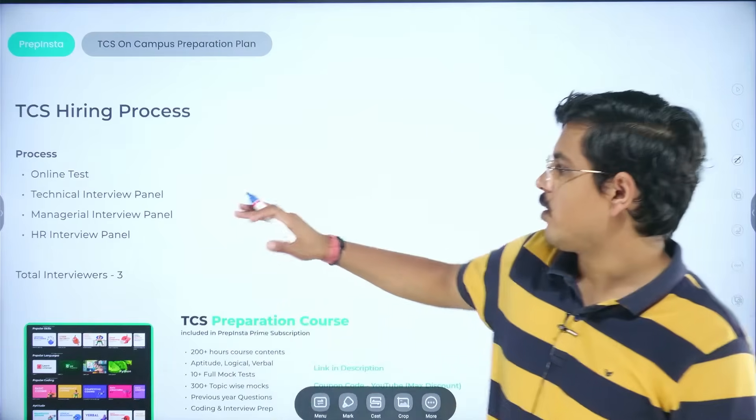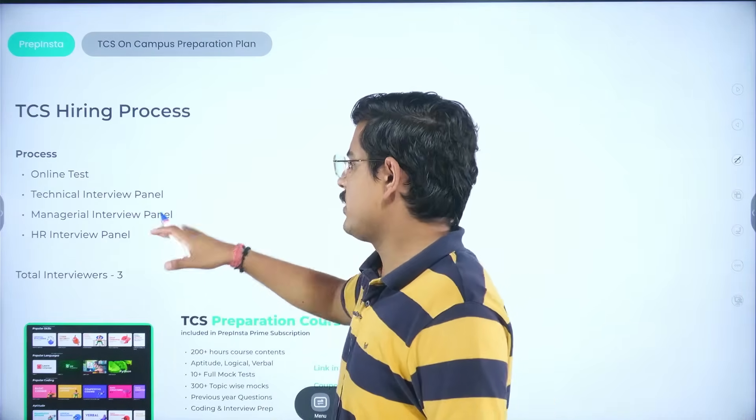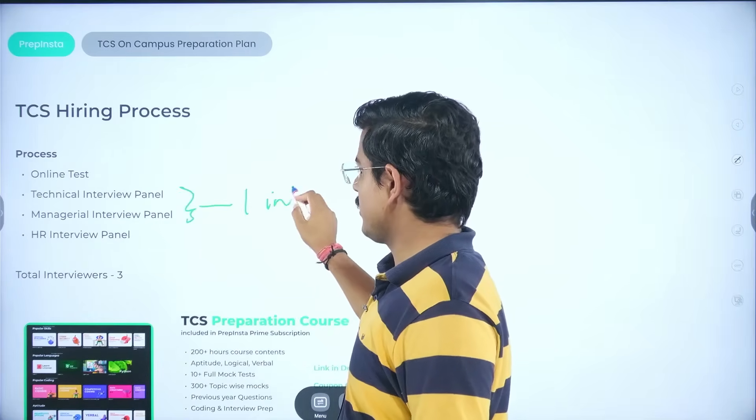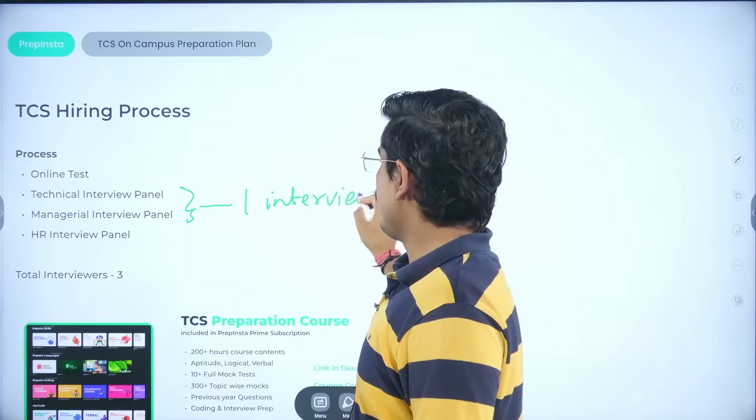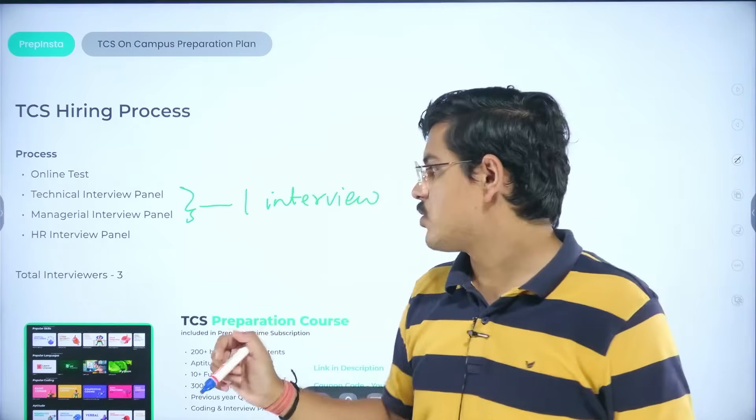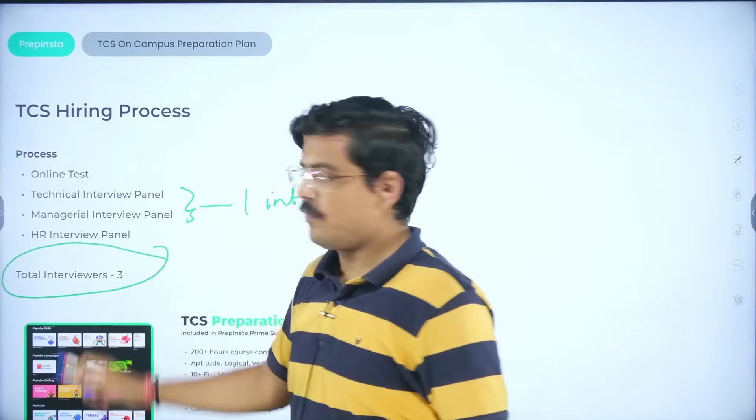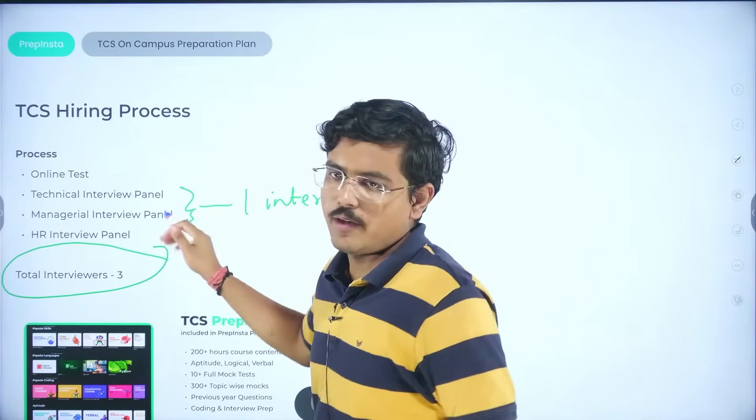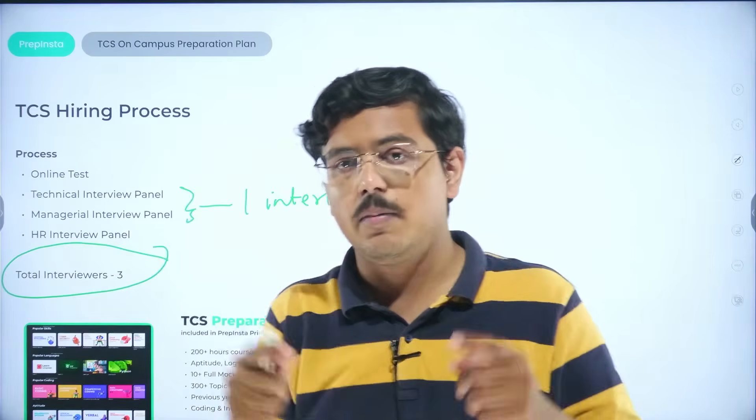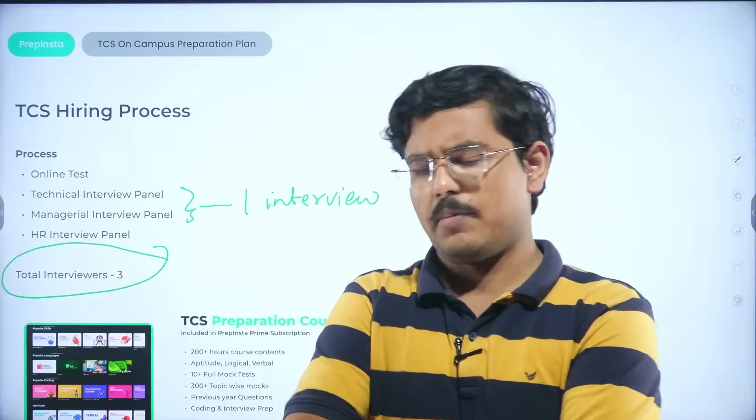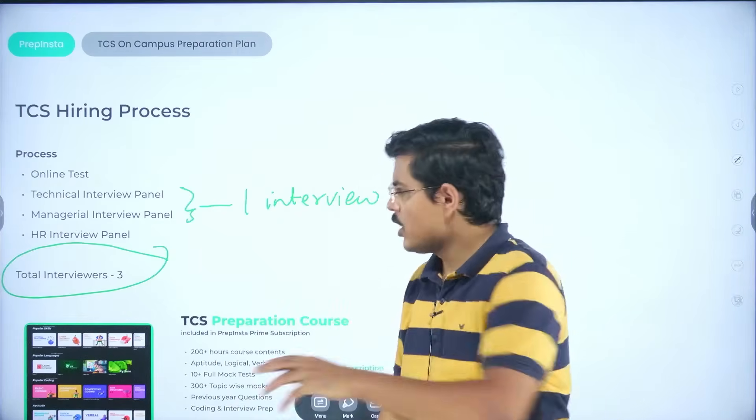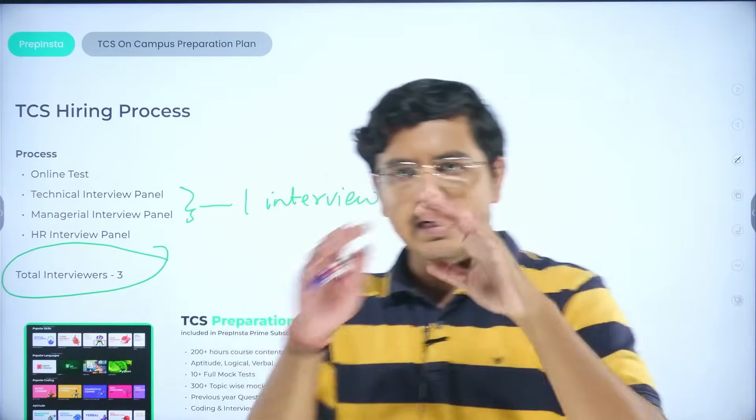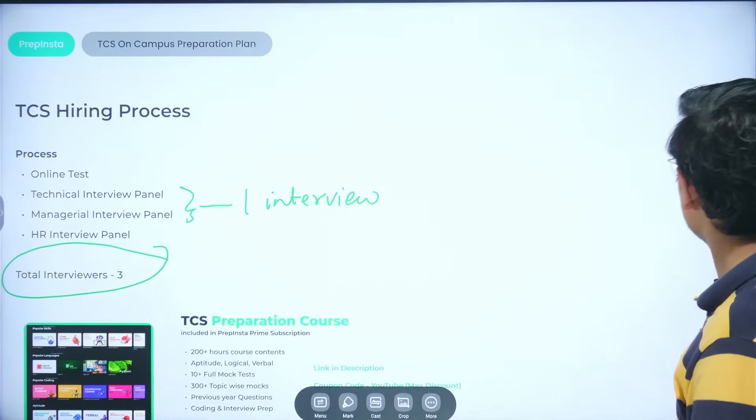The hiring process generally as I explained: online test, then you have a technical interview panel, managerial interview panel, and HR interview panel. This generally is combined in one interview only nowadays. But nowadays, when it is combined in one interview, what happens is generally the total interviewers become three. In the managerial interview panel or in this technical interview panel and generally it is clubbed between a single round. A lot of times it happens in on-campus. On-campus sees this variation. Sometimes you have two different interviews, sometimes you have one interview. If there are two people in your panel, they might take a club round.